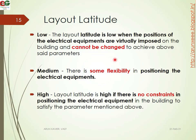Low layout latitude is when the position of the electrical equipment is virtually imposed on the building and cannot be changed. There is very little flexibility; the equipment positions are fixed and constrained by the building structure. That is the low type of latitude.